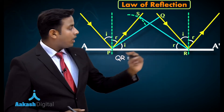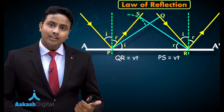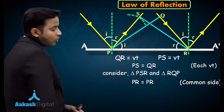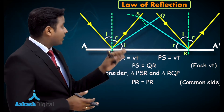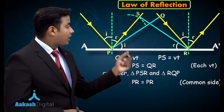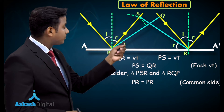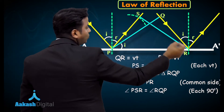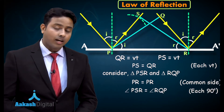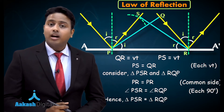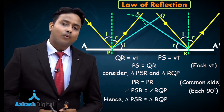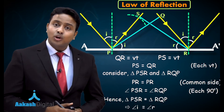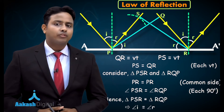Looking at the similarity of these two triangles: QR equals vt and PS equals vt, so these two sides are equal. Their base PR is also the same. The angles PSR and PQR are both 90 degrees. Using similarity laws, these two triangles are congruent, meaning all corresponding angles are equal — therefore angle i equals angle r. That is how Huygens principle proves the law of reflection.